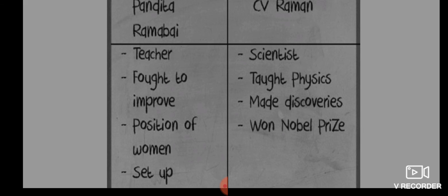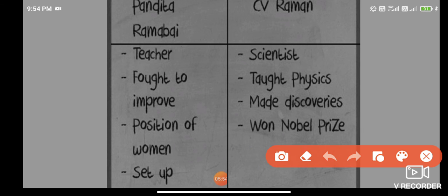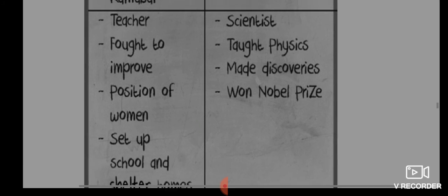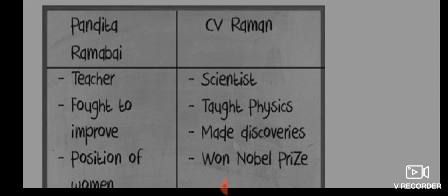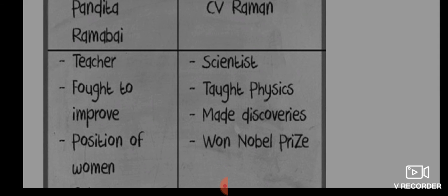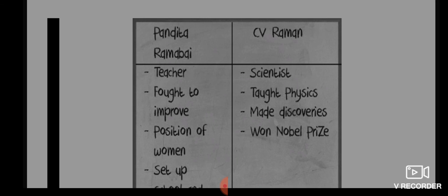Pandita Ramabai was a teacher who fought to improve the position of women and set up schools and shelter homes. On the other hand, CV Raman was a scientist who taught physics, made the discovery of how light passes through objects, and because of his work he received a Nobel Prize.